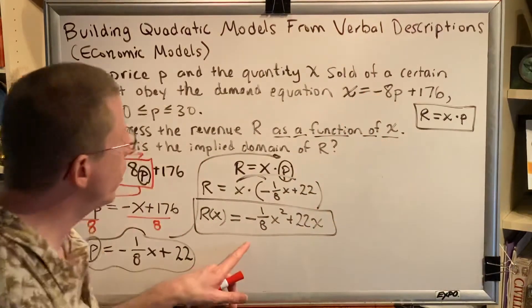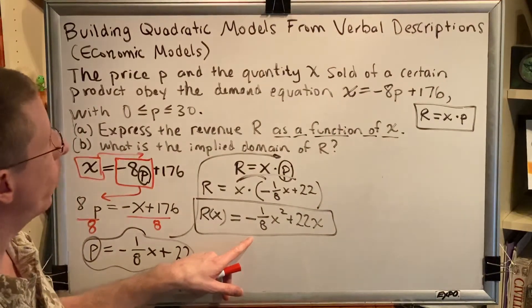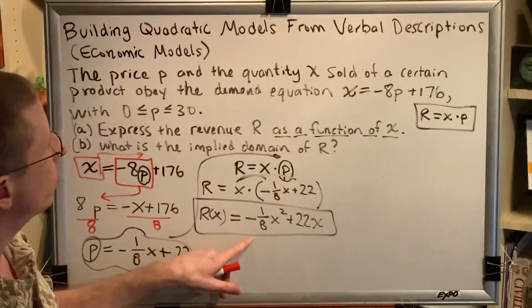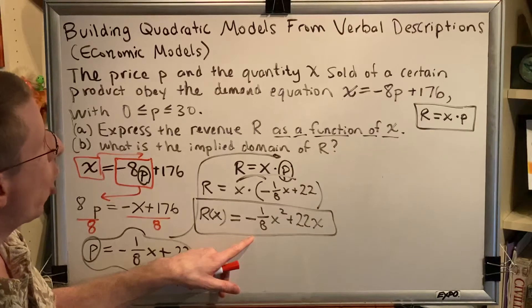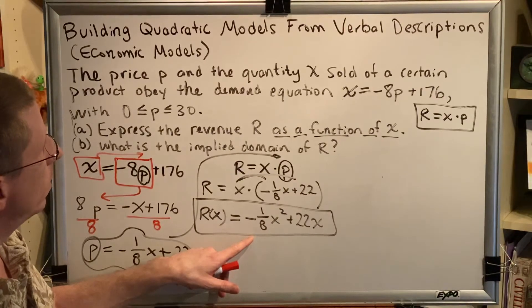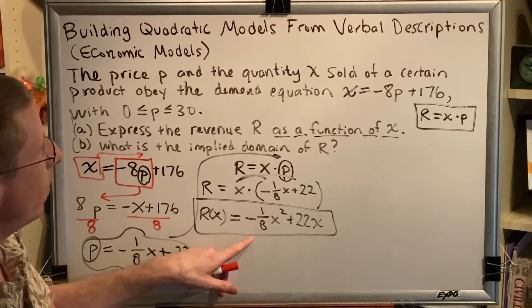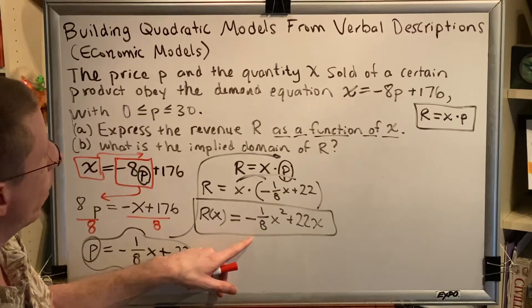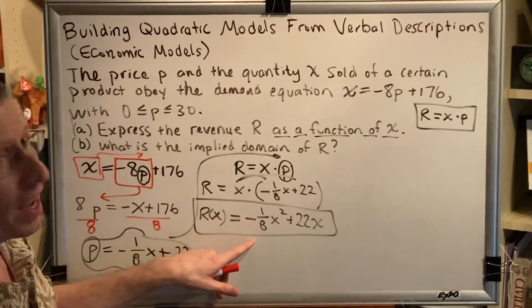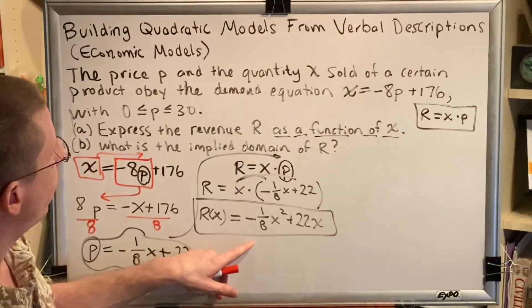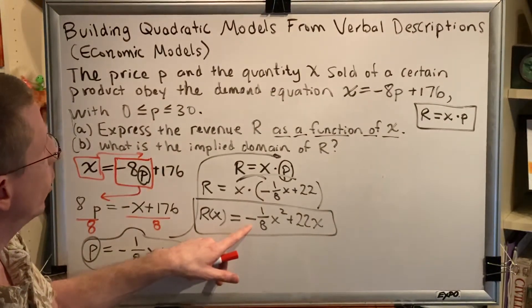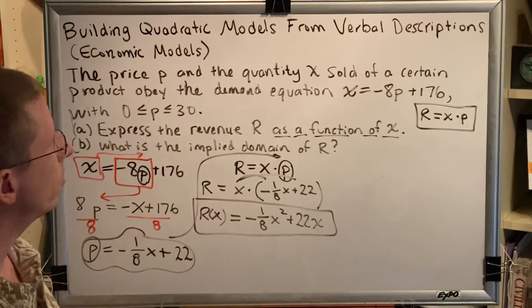The four steps for finding domain say: start with all real numbers, even radicands greater than or equal to zero, log arguments greater than zero, denominators not allowed to be zero. Well, this problem has no even index radicals and no logarithms, and the only denominator is an 8, which is not zero. And therefore, based on the equation only, we would conclude that the domain is all real numbers.